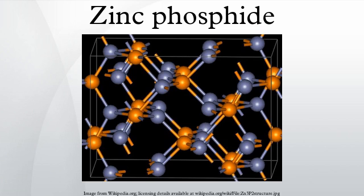A second zinc phosphide is known with the stoichiometry ZNP2. Zinc Phosphide can be prepared by the reaction of zinc with phosphorus. However, for critical applications, additional processing to remove arsenic compounds may be needed. Another method of preparation includes reacting tri-N-octylphosphine with dimethyl zinc, represented as 3Zn + 2P → ZN3P2.